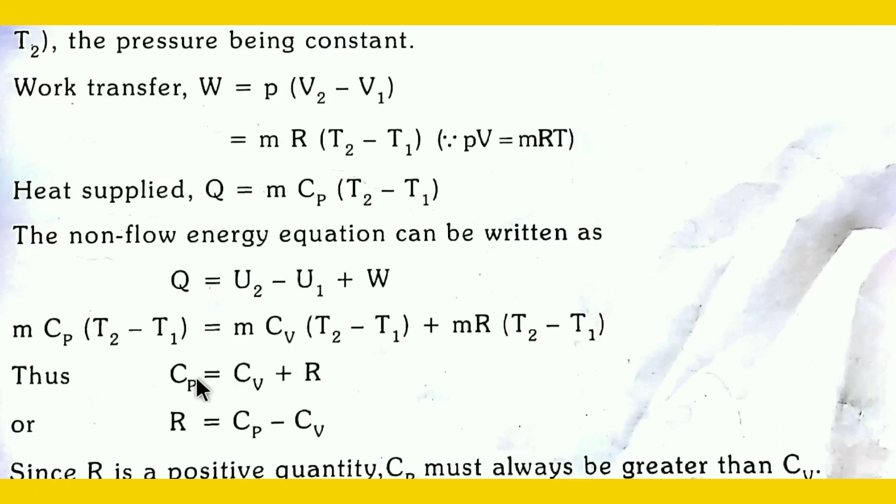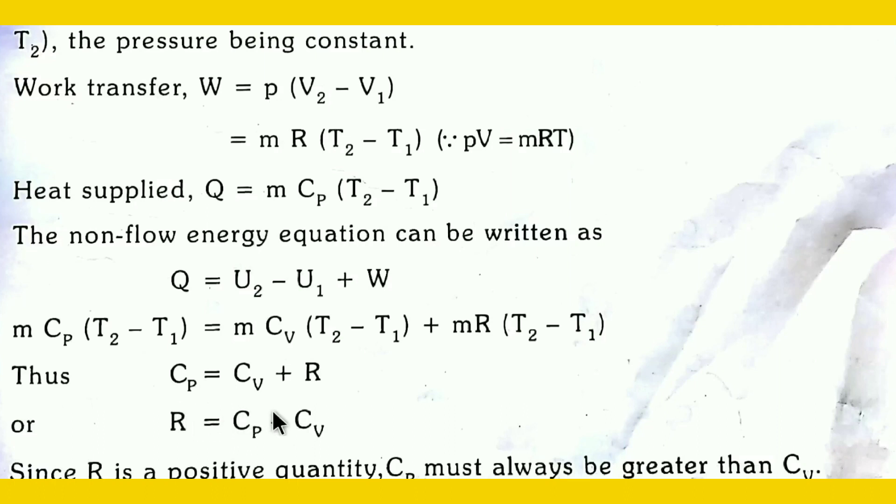Therefore finally R is equal to Cp minus Cv. This is Mayer's equation. Since R is a positive quantity, Cp must always be greater than Cv. So this is Mayer's equation.